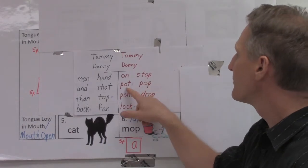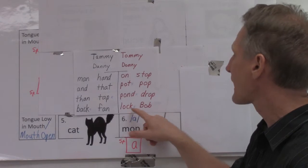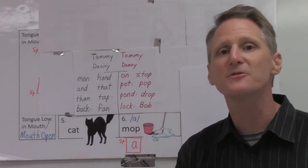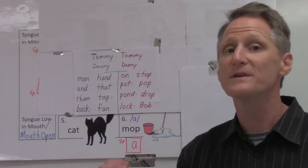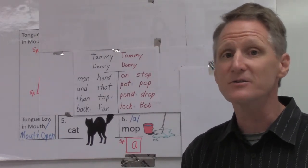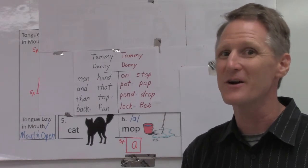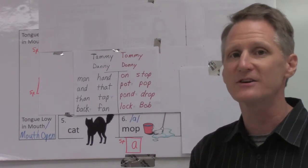Here are some more examples. On, stop, pot, pop, pond, drop, lock, Bob. All of them with the letter O. So please, develop that association, letter O with the sound ah. It's not exclusive. It's not the only association you need to know with letter O, but it is an important association.